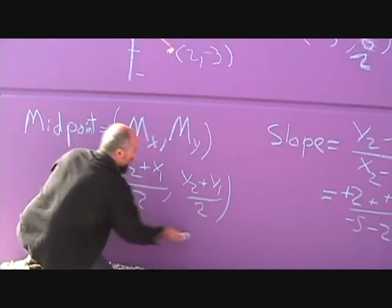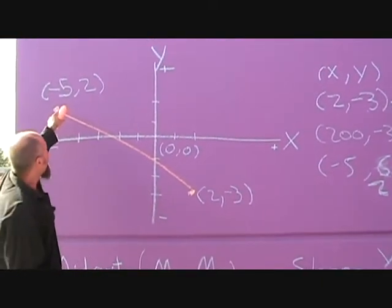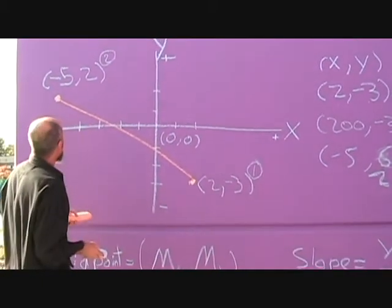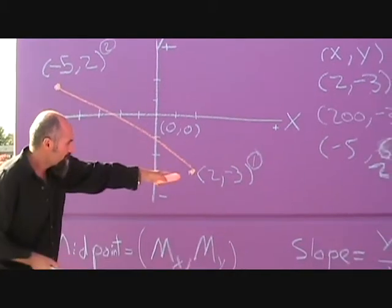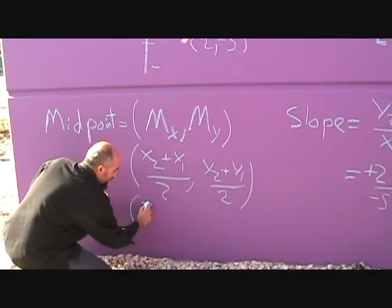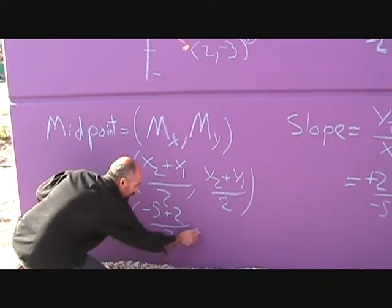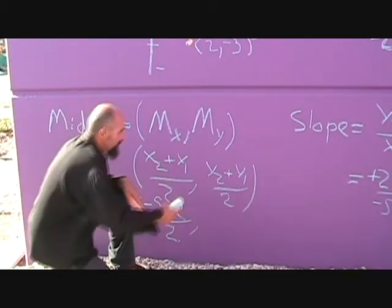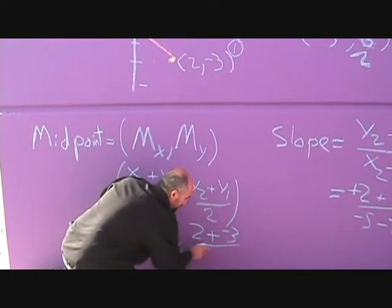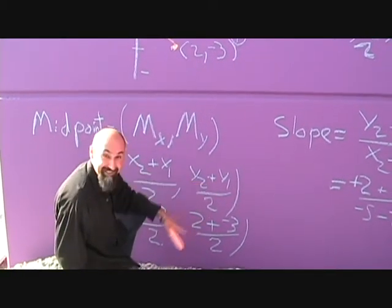X2 we chose as being the second point and this one as being the first point, so x2 is negative 5 plus 2. This becomes negative 5 plus 2 divided by 2, and for the y is y2 which is 2 plus negative 3 divided by 2. It's 2 for y2, not negative 2 like the mistake we did for the slope one.